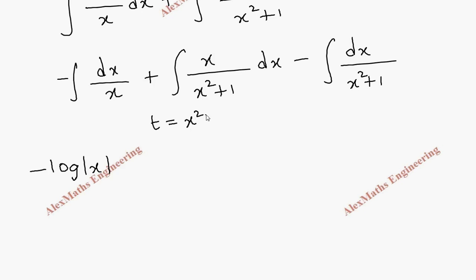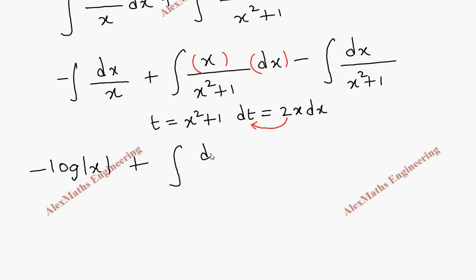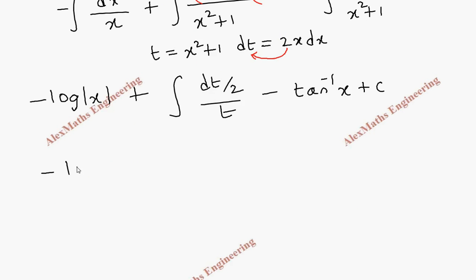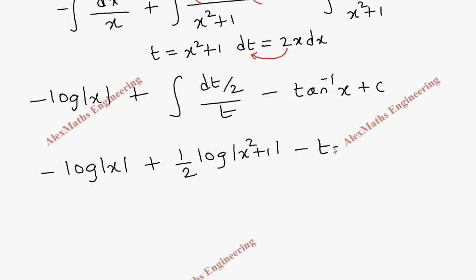The first term gives minus log |x|. For the second term, let t equal x² plus 1, so dt equals 2x dx, meaning x dx equals dt over 2. This becomes plus one-half times the integral of dt over t, which gives plus one-half log t. The third term is a direct formula giving minus tan⁻¹ x. Replacing t with x² plus 1, I2 equals minus log|x| plus one-half log(x² plus 1) minus tan⁻¹ x plus C2.